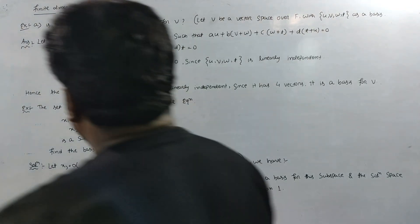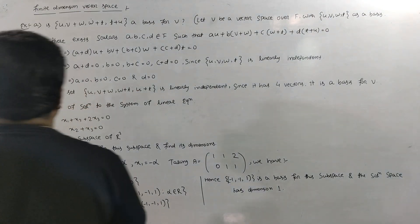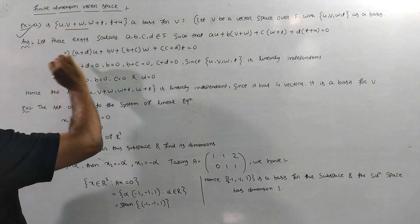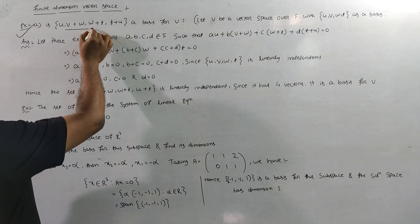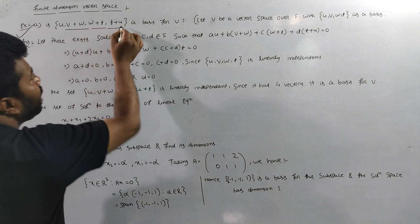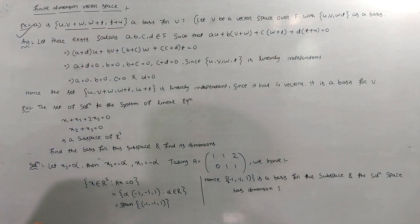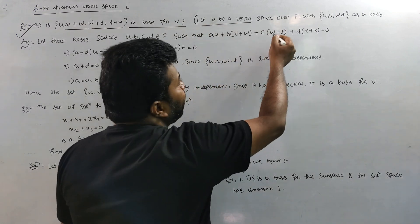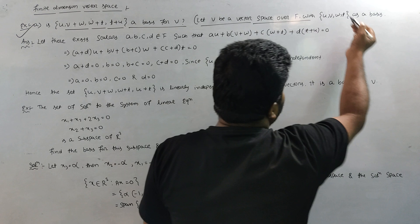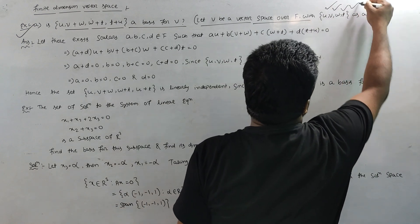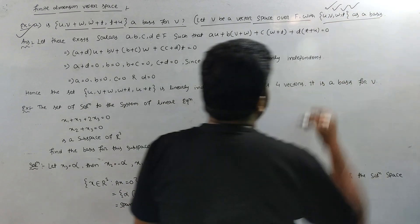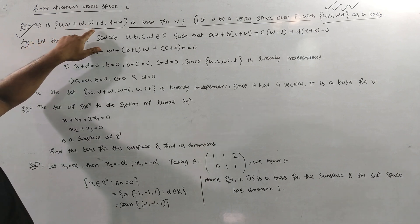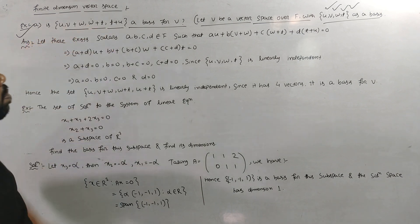Let's see a related example. The first question: V is a vector space over F, and u, v, w, t are the basis. Show that the set {u, v+w, w+t, t+u} is also a basis of V.